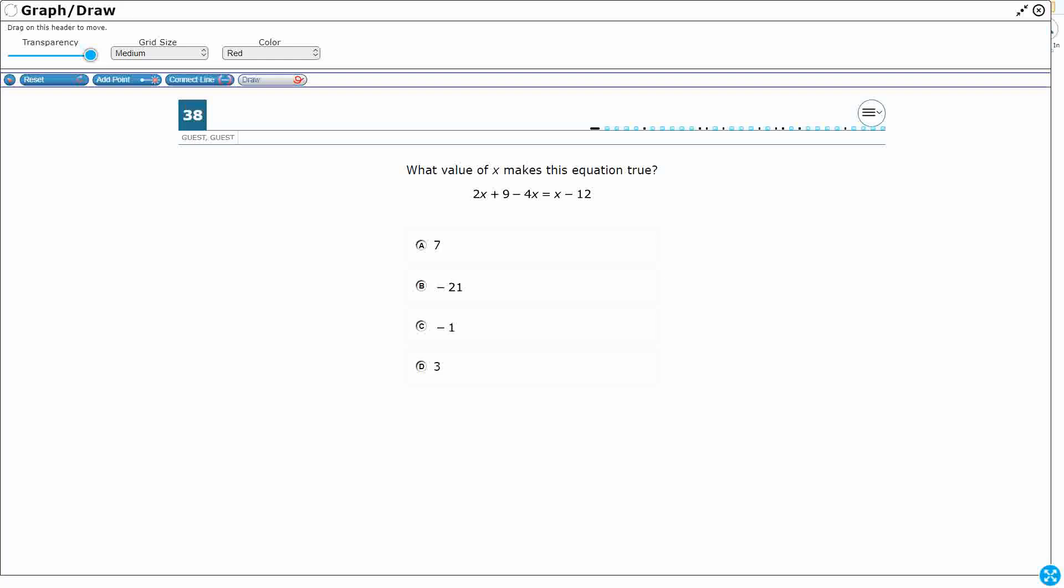So we need to find the value of x that makes this equation true, and we've got two options. If we wanted to, we could just plug and play. We could take each of these values—7, negative 21, negative 1, 3—plug them into the three spots where we see an x, simplify, and see which one makes a true equation. Not the most efficient way, because if it ends up happening to be D, we're having to do a whole lot of math before we get through A, B, and C. So let's solve it by isolating the variable, and then we'll plug and play just to verify.